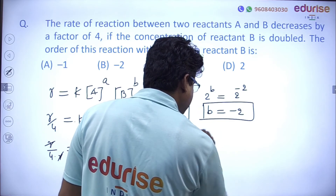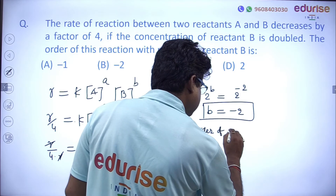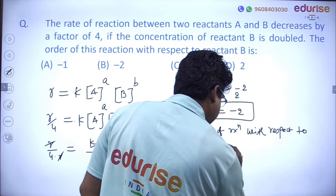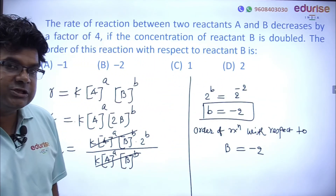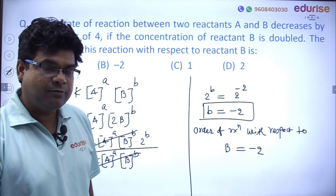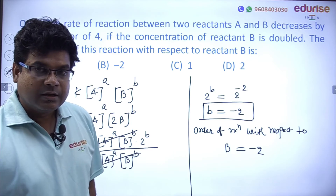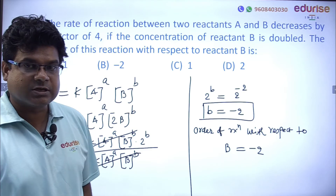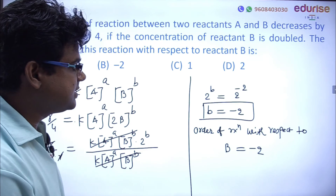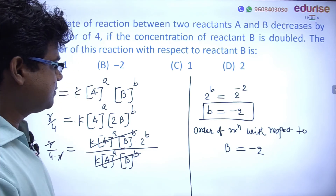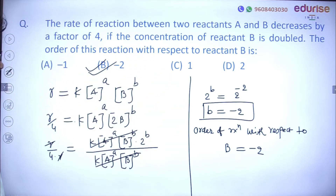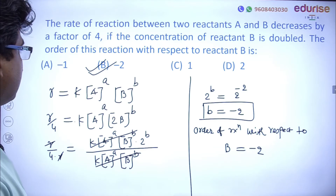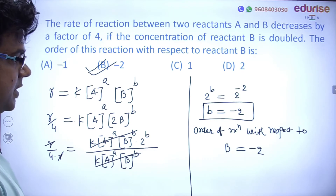Order of reaction with respect to B is −2. Order of reaction can be zero, fractional, negative, or positive — it can accommodate any value. But molecularity can only be a whole number (natural number) — it cannot be zero, fractional, or negative. We will discuss that in the next class. So the answer here is −2, meaning option B is the right option.